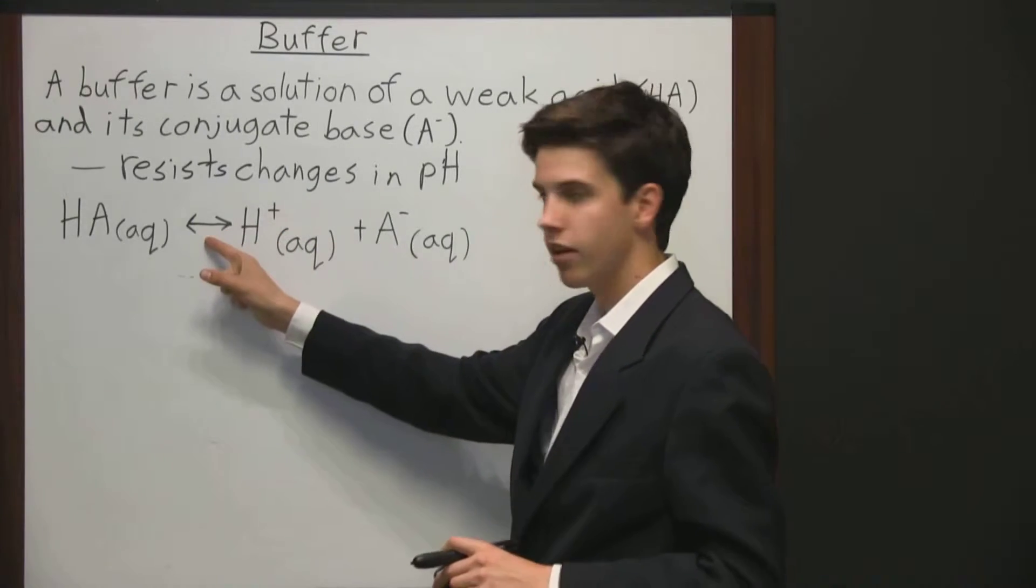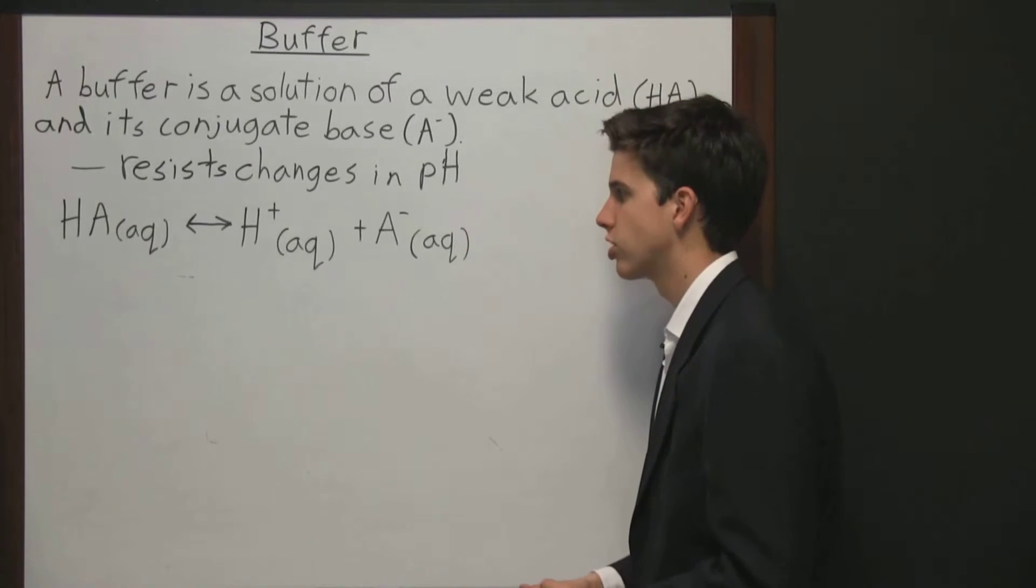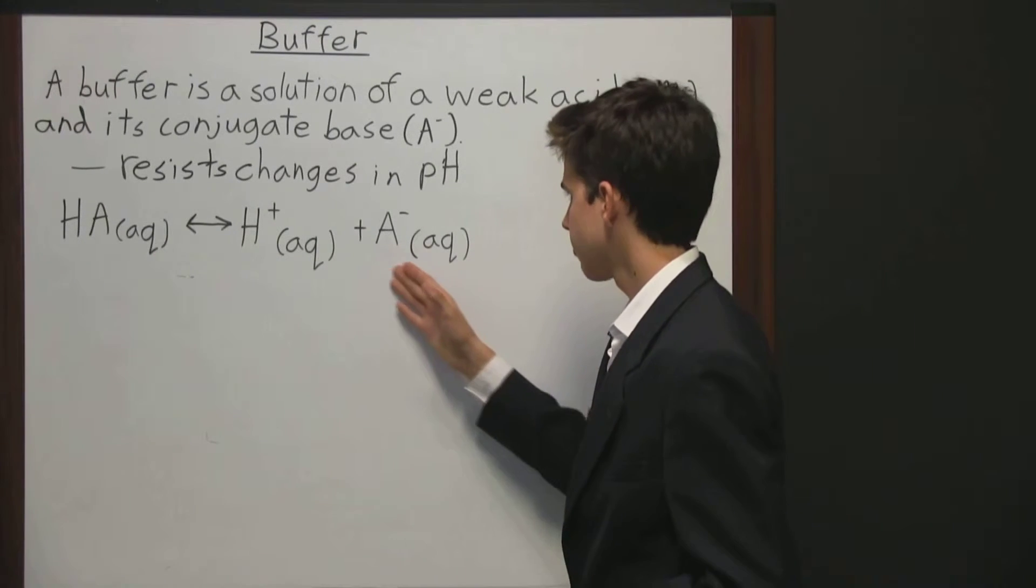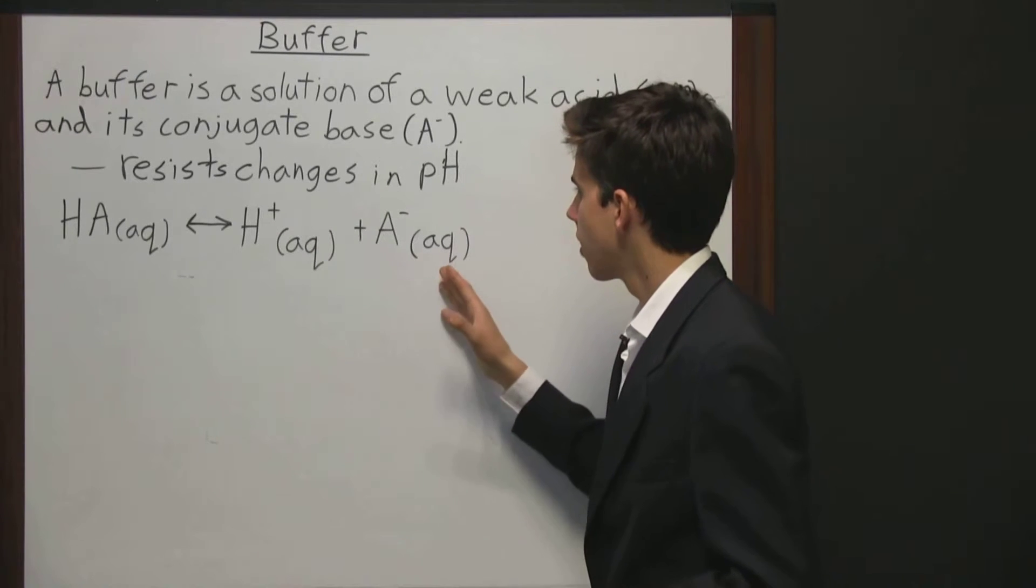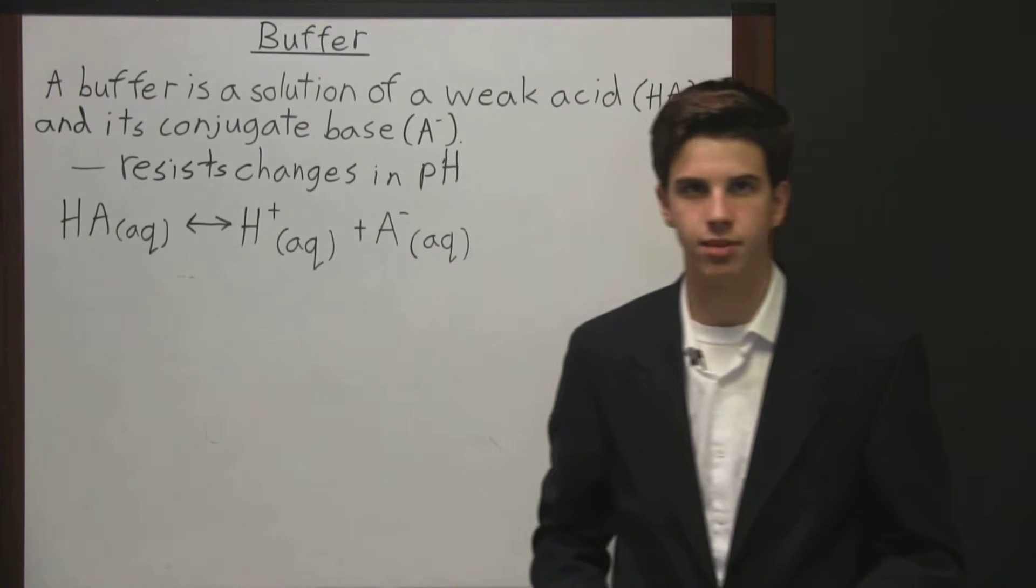This reaction is at equilibrium because it has a double-headed arrow, meaning this reaction is moving in both directions. So not only is this weak acid dissociating into its principal parts, but the parts over here are forming back together to form that weak acid.